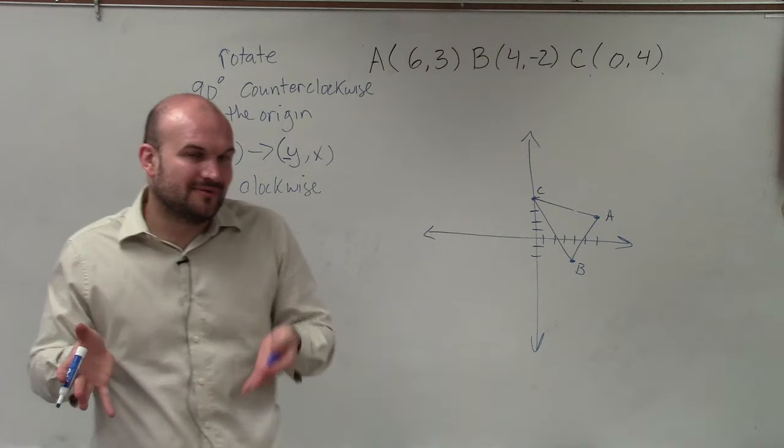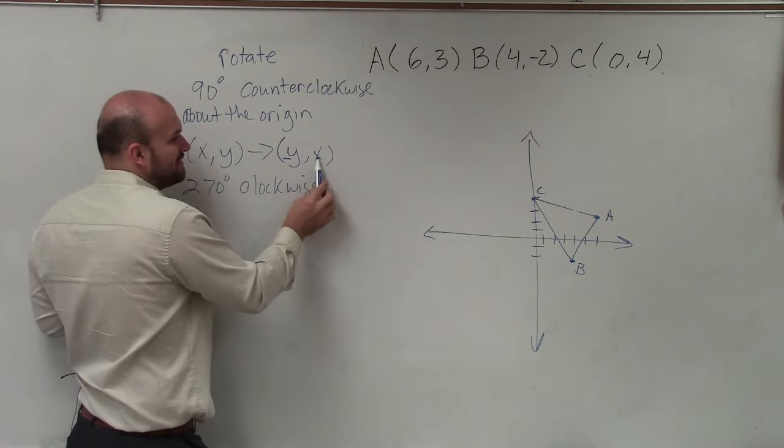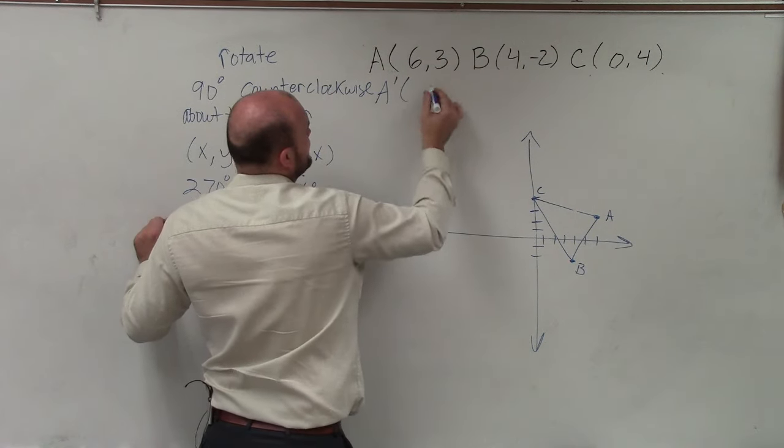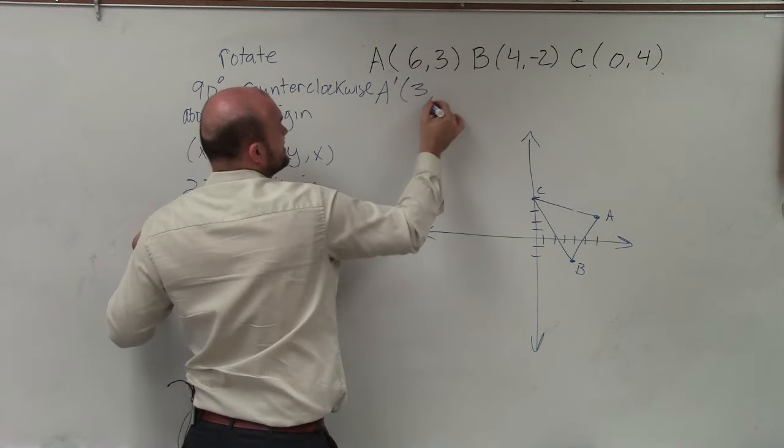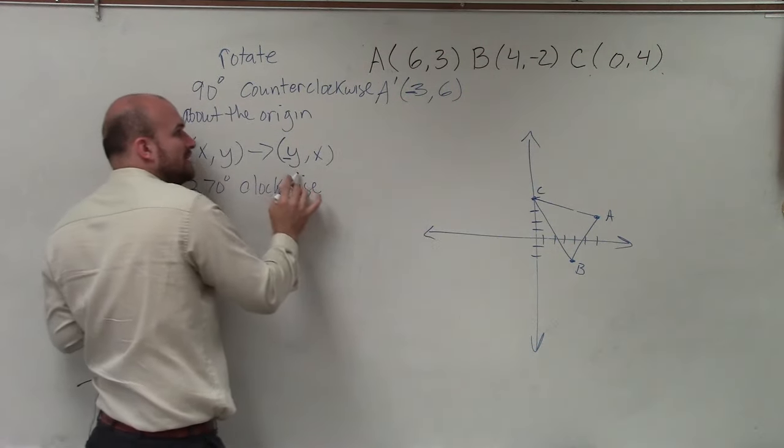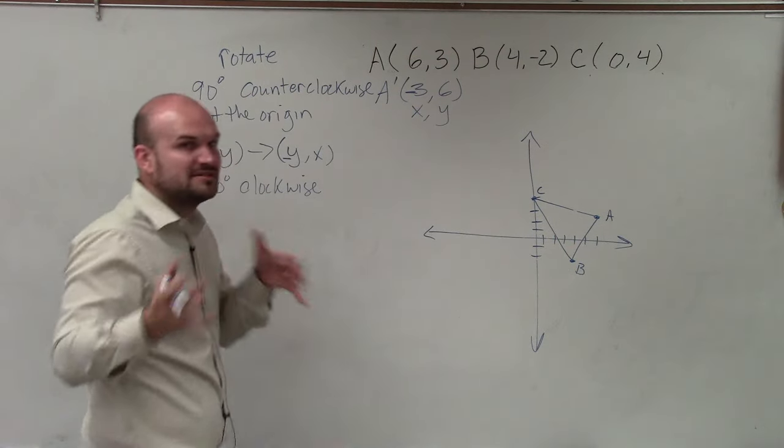Now remember, when I say this, you're not changing which axis is x and which is y. For A prime, I swap, so it's now 3 comma 6, and then I negate the old y-coordinate, which is now my new x-coordinate. So you're still plotting them as x and y coordinates.